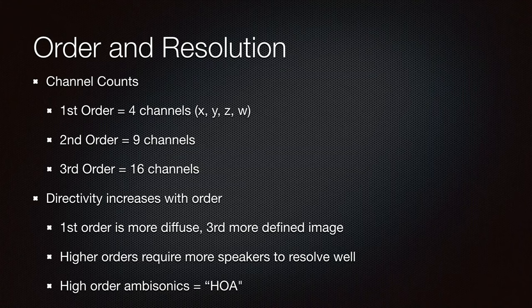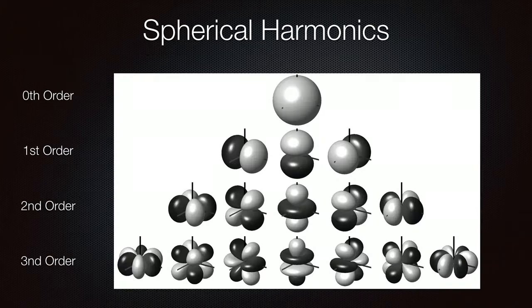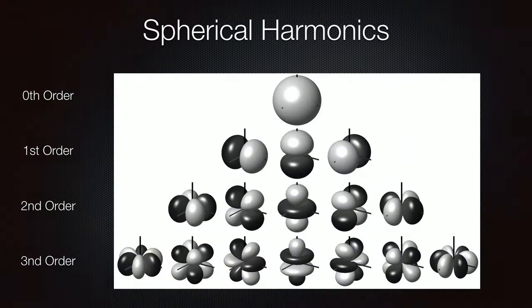We'll sometimes see the term HOA — high-order Ambisonics. We call these things spherical harmonics. At zeroth order it's omnidirectional. First order uses four channels — an omni (W) plus three directional channels: X, Y, and Z, which are essentially polar patterns. Based on the phase relationships between these, they encode directionality. If I have something that's positive in X, Y, and Z it's going to locate in that direction. W gives us distance information. With four audio channels we can encode a wave field — really clever stuff, developed back when we didn't have a lot of computing power. Second order adds more lobes, takes nine channels of audio. Third order takes 16 channels, giving more resolution in all three axes.